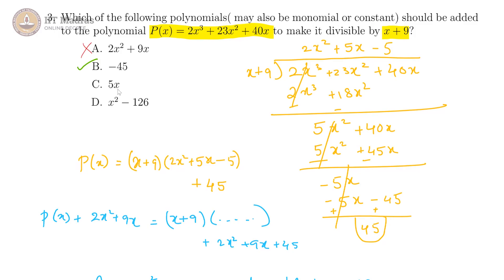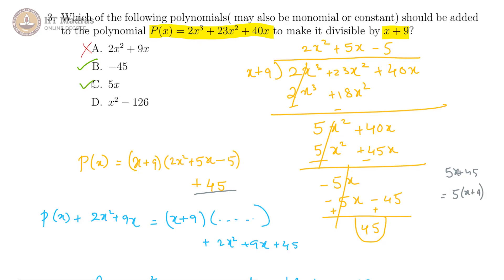What happens if we added 5x? We get 5x plus 45. We have this remainder of 45, so we are getting 5x + 45 which is equal to 5 times (x + 9), which is directly divisible by x plus 9. So this is correct too — option C is also correct.